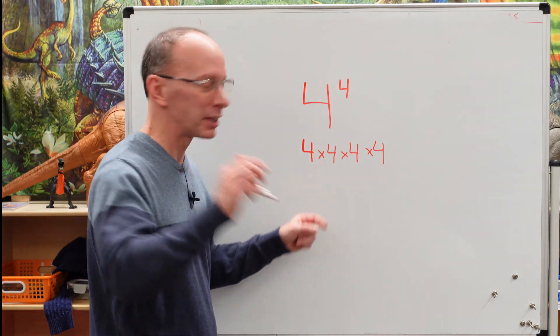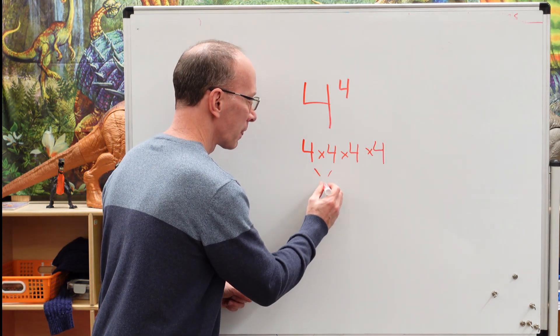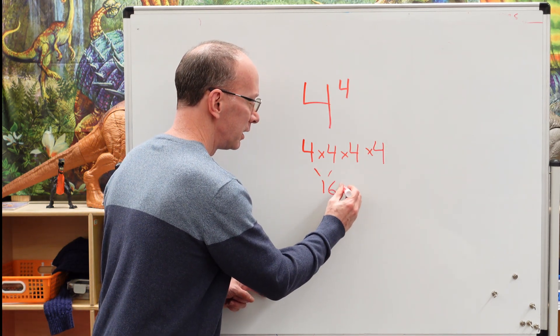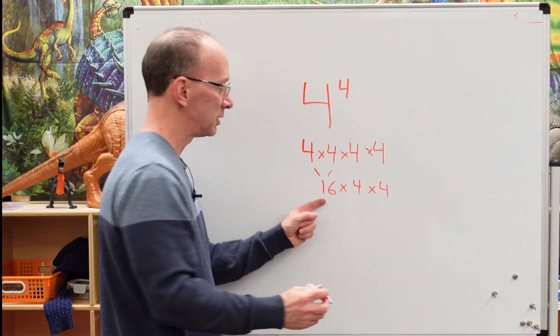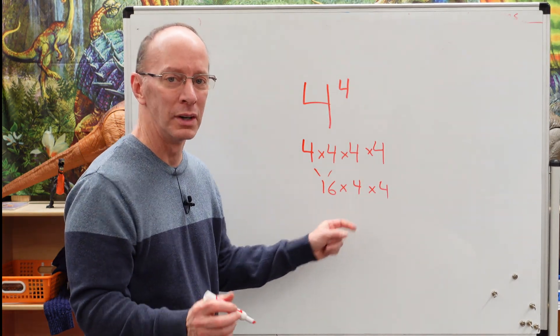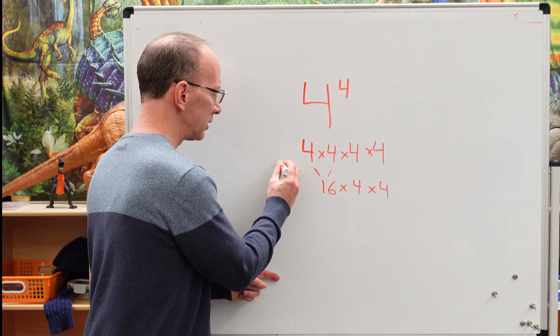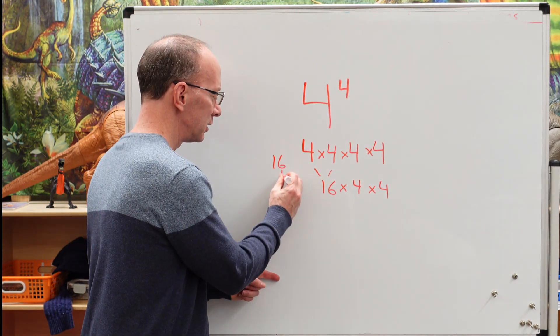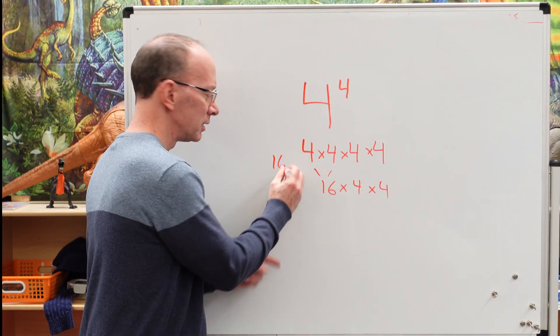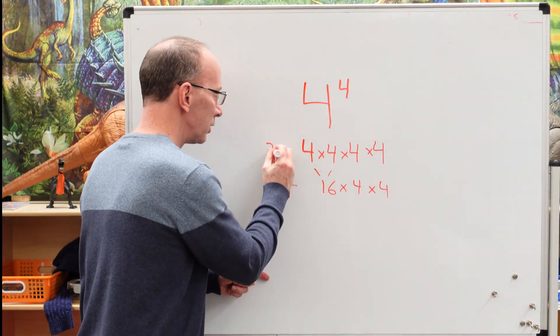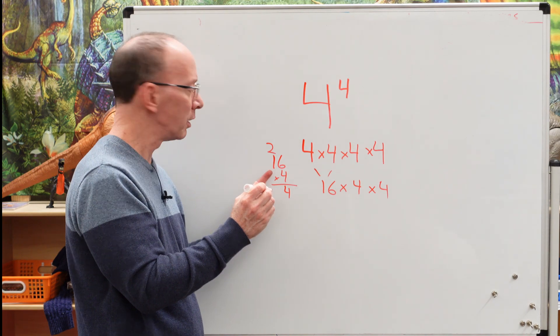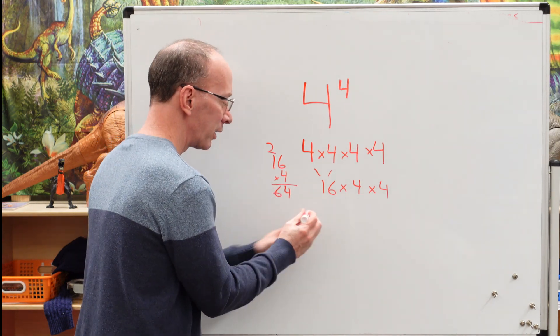All right. Four times four is 16. We'll put 16 right here. Times four times four. 16 times four. Oh, I got to do a little figuring on that one to the side here. So I got 16 times four. Six times four is 24. Put the four here. Put the two up here. Four times one is four. Five, six. All right. We got 64.